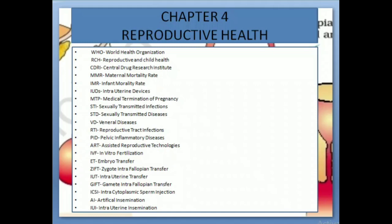VD: Venereal Diseases. RTI: Reproductive Tract Infections. PID: Pelvic Inflammatory Diseases. ART: Assisted Reproductive Technologies. IVF: In Vitro Fertilization. ET: Embryo Transfer. ZIFT: Zygote Intrafallopian Transfer. IUT: Intrauterine Transfer. GIFT: Gamete Intrafallopian Transfer. ICSI: Intracytoplasmic Sperm Injection. AI: Artificial Insemination. IUI: Intrauterine Insemination.